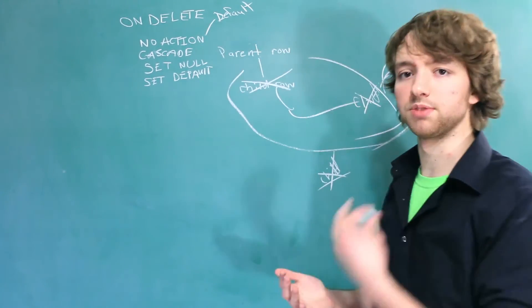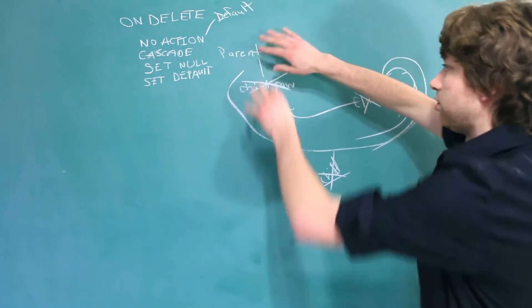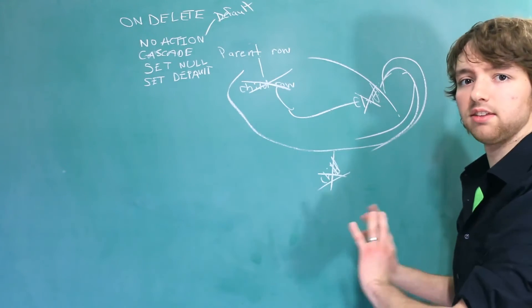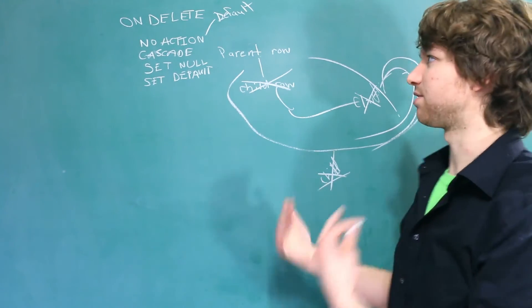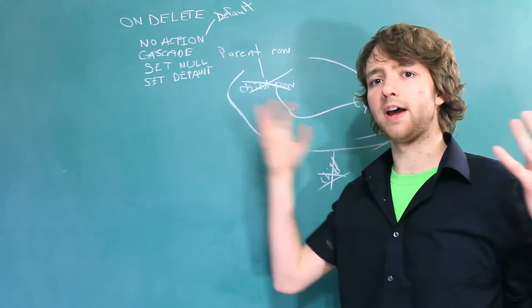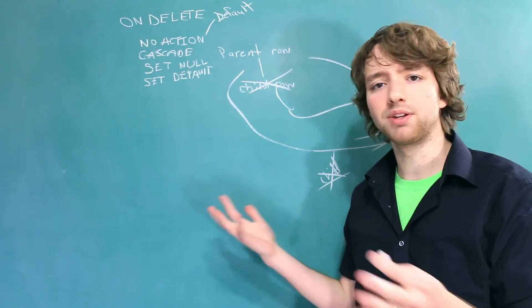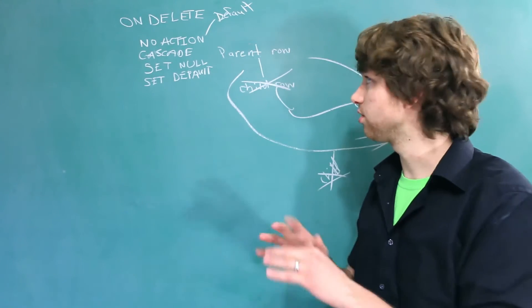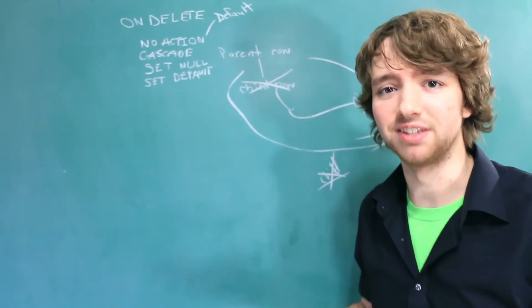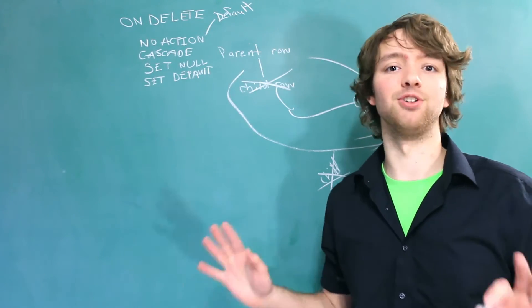CASCADE, on the other hand, comes in handy because if you delete the parent, it's automatically going to pass on those changes and just delete anything that references it. But as you can see, that could be very dangerous because you have all these connections and you don't have all the connections memorized in your head. So you just think you're going to do something minor, it's not going to ruin much, you're just going to delete this one row, no one will even notice. Then all of a sudden you delete like 40 rows because everything's interconnected.